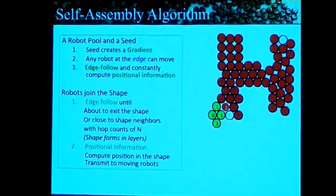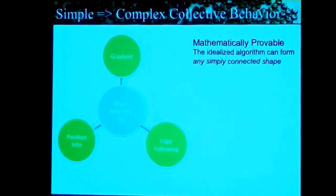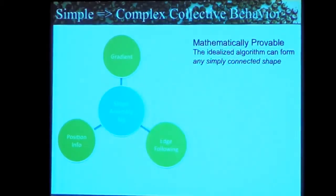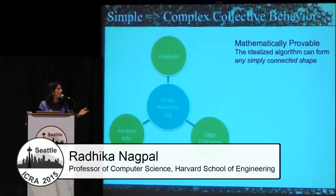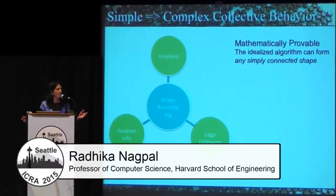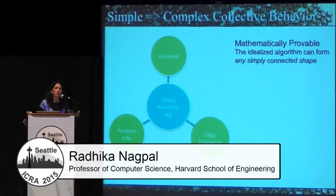The nice part is this algorithm actually does work. Mike and Alex Cornigio proved that in an idealized setting, this algorithm can make any simple connected shape — so you could give it the letter H or the letter E. We could probably extend it to do other kinds of shapes as well.